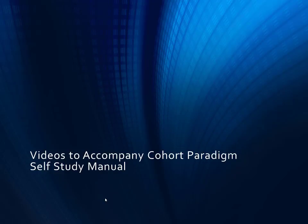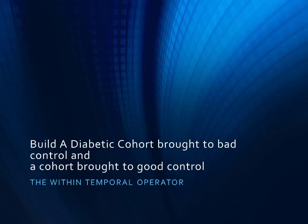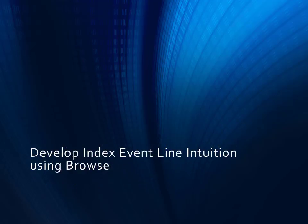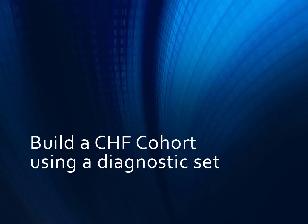What follows will be videos to accompany the Cohort Paradigm Self-Study Manual. You will learn how to build a diabetic cohort, then build a diabetic cohort brought to bad control or good control using the within temporal operator. You will develop Index Event Line intuition using the Browse function, and learn to build a CHF cohort using a diagnostic set.